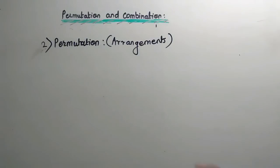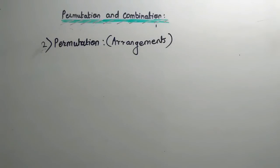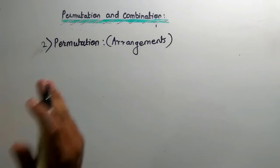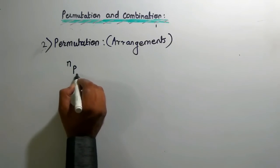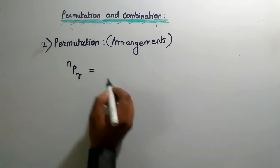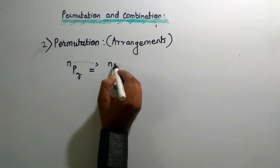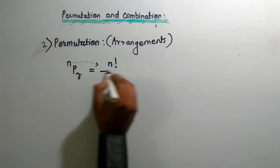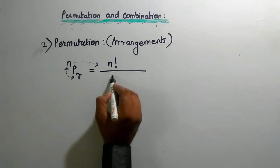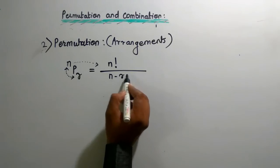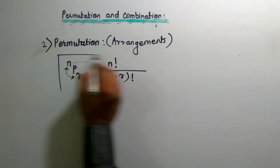The next basic is Permutation. Permutation means arrangement. There is one formula regarding permutation and that is nPr, which equals n factorial in the numerator divided by (n minus r) factorial in the denominator. This is the important formula.